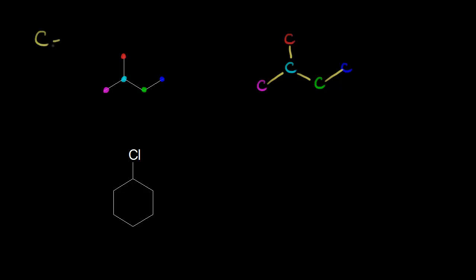Next, let's figure out how many hydrogens. Remember that a neutral carbon atom forms four bonds. The carbon in magenta already has one bond, so it needs three more — three bonds to hydrogen. The top carbon in red also already has one bond, so it needs three more bonds to hydrogen. The light blue carbon already has three bonds, so it only needs one more — so we can draw in one hydrogen.